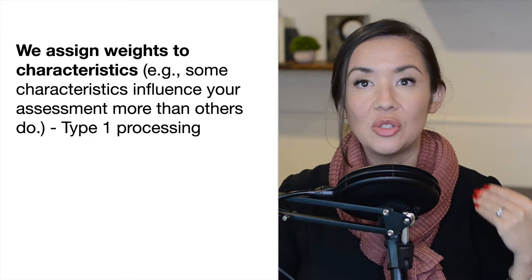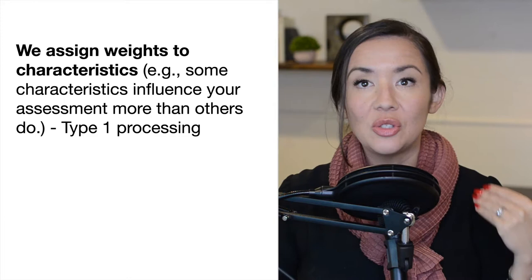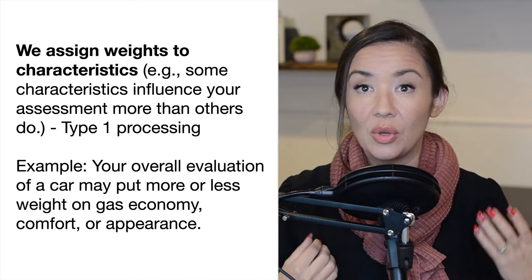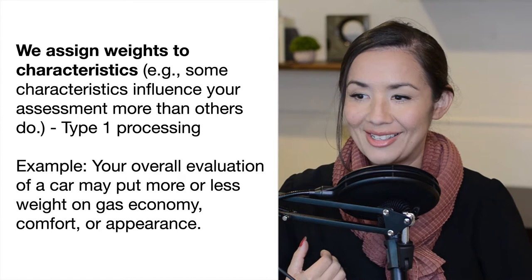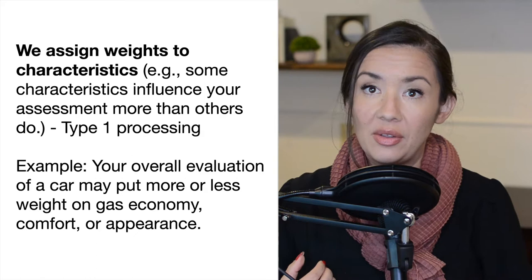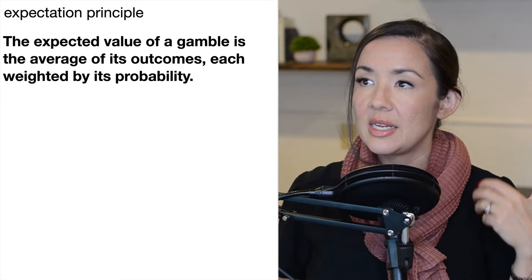To begin, we need to understand that we assign weights to specific characteristics, meaning that when there are many factors that go into our decisions, some we weigh more highly than others. If you're going to buy a car, for example, you might weight the gas economy, the comfort, or the appearance of the car over other things such as safety. The things we include in our decisions have weightings based on how we value the individual components.